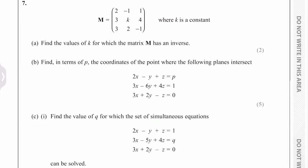Okay, for question c we've been asked to find the value of q for which the set of simultaneous equations can be solved. So if you notice here that we've got k is negative 5 and we said in part a that k cannot equal negative 5, so these three planes will not intersect at a single point.